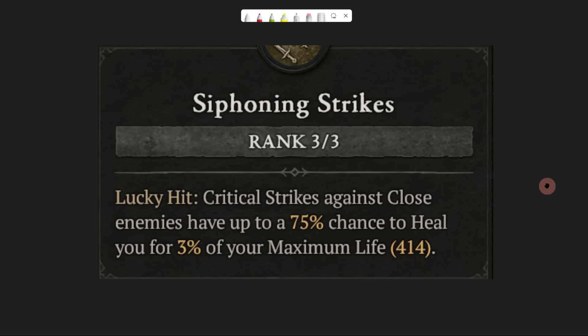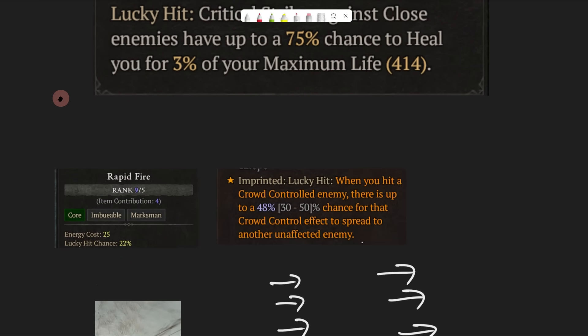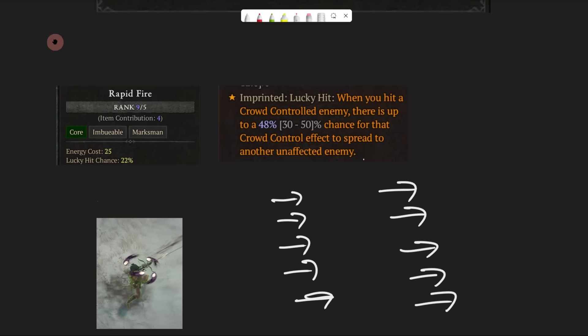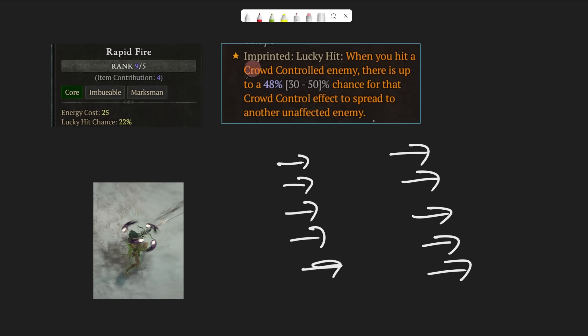In order to understand this, we first need to understand Lucky Hit. What we're going to do is go over how Lucky Hit works in a slightly simpler example, and then we'll come back to this towards the end. Here we have another skill, which is the Aspect of Misery, which tells us that Lucky Hit, when you hit a crowd-controlled enemy, there is up to a 50% chance for that crowd-control effect to spread to another unaffected enemy.